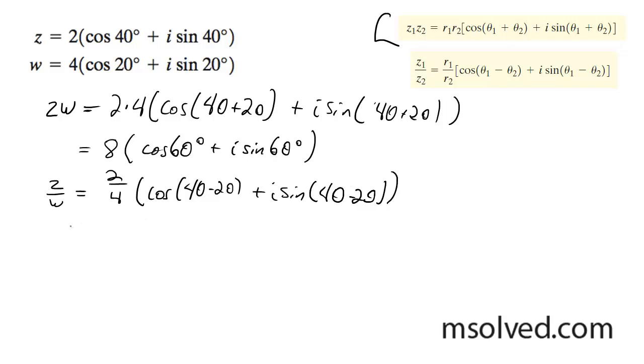So what this ends up being is 1 half of cosine of 20 degrees plus i sine of 20 degrees. That is it.